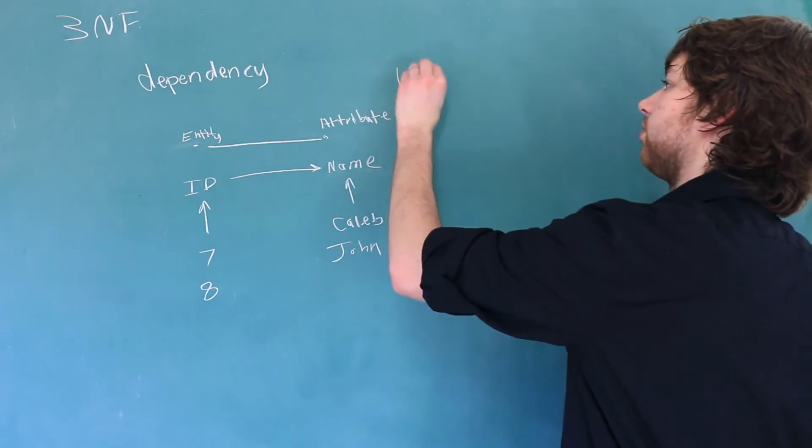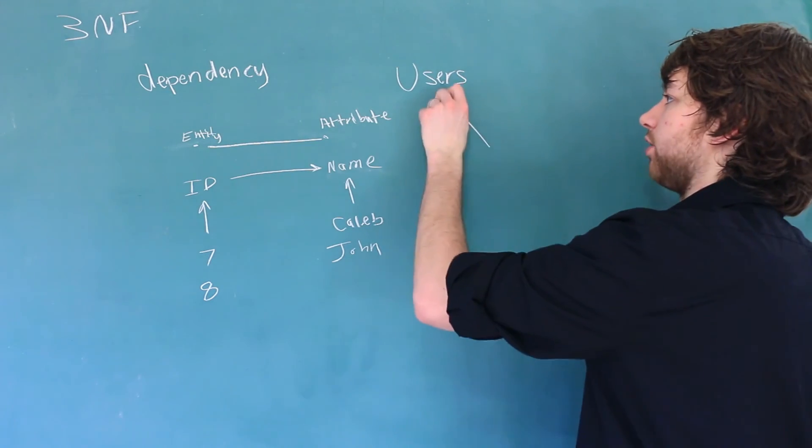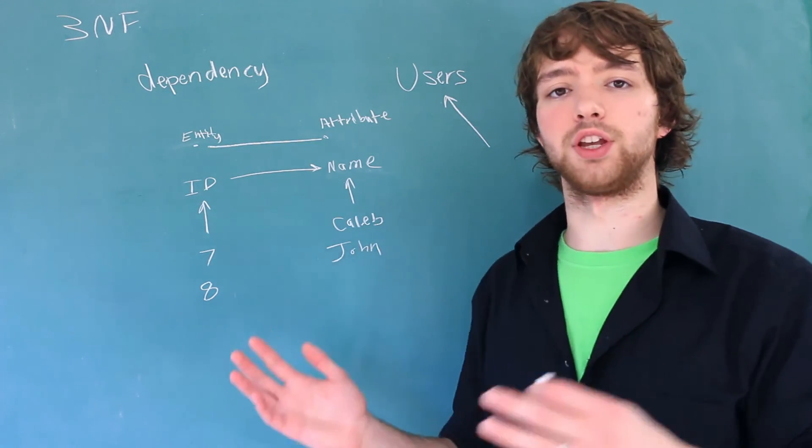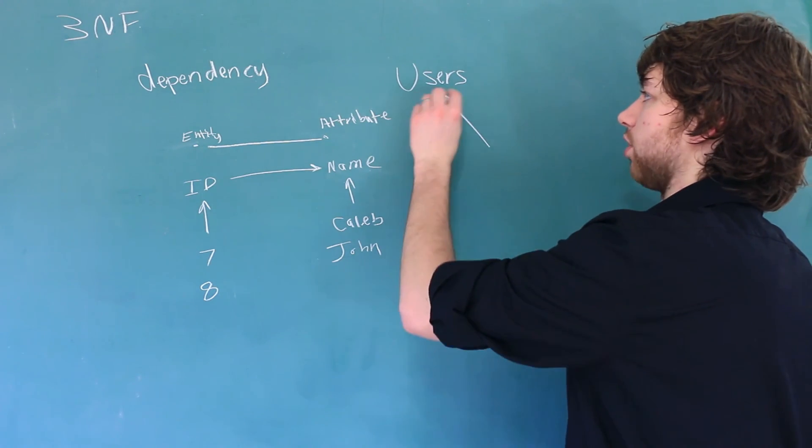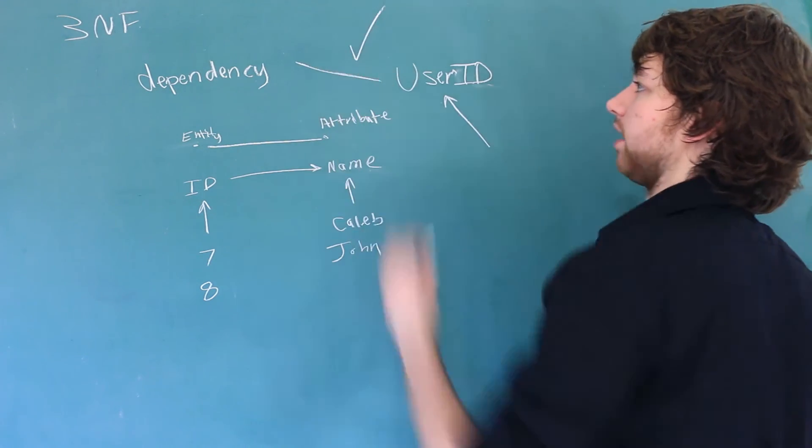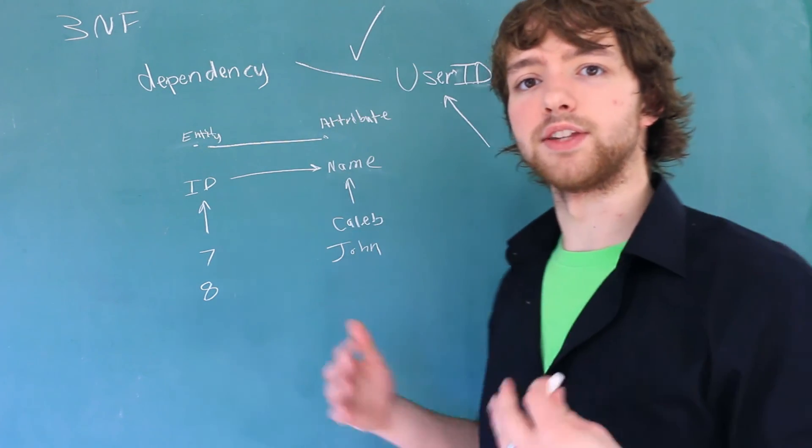So if we have a user's table, you can say that all of the columns depend on the user. And we'll often describe the user using the primary key. So we would say all of the columns are dependent on the user ID. That kind of dependency is okay. There's other kinds of dependencies that are not okay.